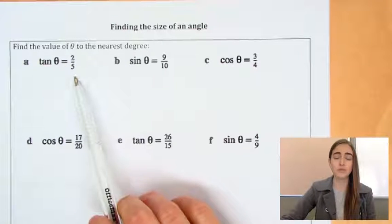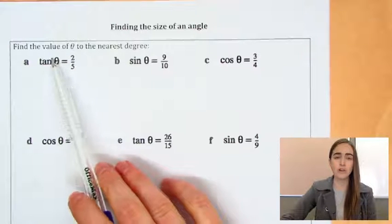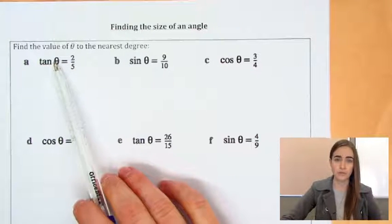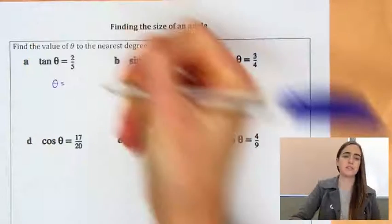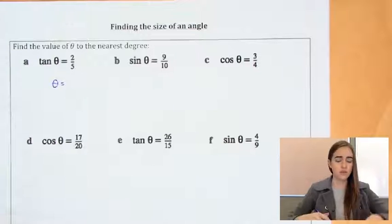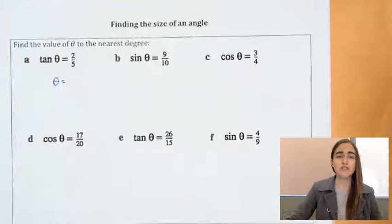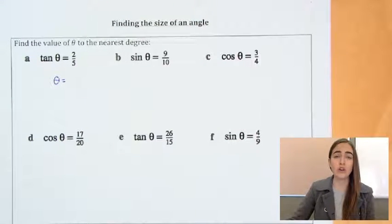So here we've got tan theta equals 2 over 5, and we want to know what that theta is equal to. So whenever we're trying to get something on its own, we have to do the opposite to get rid of everything else. So if we're trying to get that theta on its own, we're trying to get rid of that tan, we need to do the opposite.